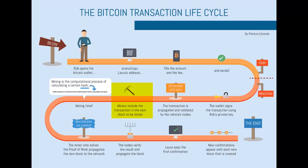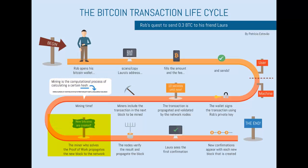It should be noted that because of the geographic location of the nodes and the time it takes for packets to traverse the networks, it is possible that each node may not have exactly the same transactions in their block, but they will be very, very close. Once the transactions have been added to a block, each node will start to solve a mathematical formula. This process is known as mining. The first node to solve the formula will have their block added to the blockchain.